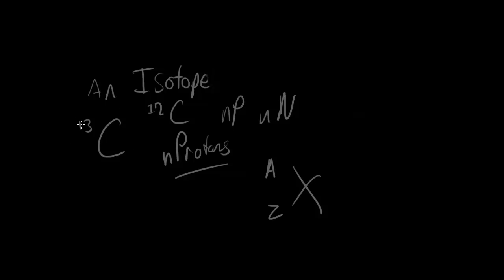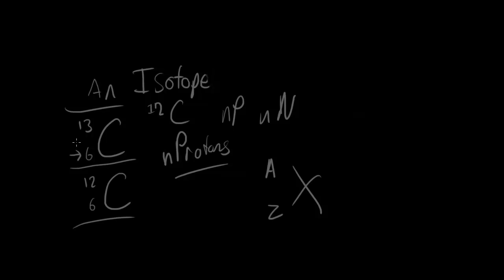Carbon-13 means it has 13 nucleons, which is the sum total of the protons and the neutrons. For the most common isotope carbon-12 with a six, the six does not change — these are two different isotopes. We can find the number of neutrons by subtracting the atomic number from the mass number: 13 minus 6 gives seven neutrons, whereas 12 minus 6 gives six neutrons. So we've got different numbers of neutrons and therefore different isotopes.